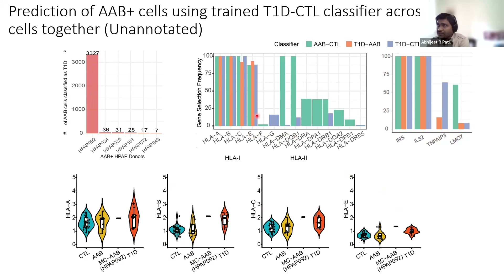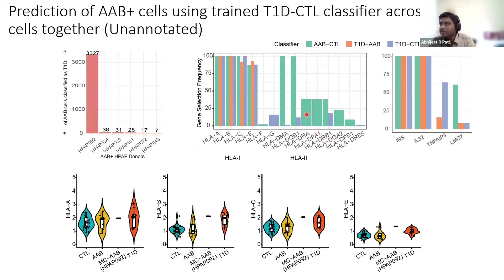This plot shows gene selection frequency — how many times a particular HLA class I gene was picked across 100 iterations on different classifiers. Across all three classifiers, HLA-A, B, C, and E were picked almost 100 times. We also checked HLA class II genes, which are known from the literature but may not be as impactful in type 1D — they were not picked as frequently. On the right-hand side, non-HLA genes such as insulin and IL-32 — well known in the literature — were also picked by the classifier.